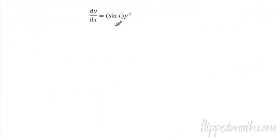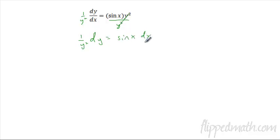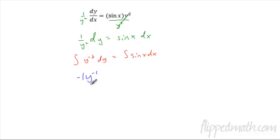Let's do another one. These are always going to be some kind of multiplication or division — it doesn't really work with addition or subtraction. First thing I've got to do is divide both sides by y squared to get my y's over here. So I'm looking at y squared dy, and bring the dx over — it's sine x dx. Then we look at the integral of y to the negative 2 with respect to y, and I have a trig function on the other side. Take the antiderivative, bump it up one, divide by negative 1. The antiderivative of sine is negative cosine — make sure you've got the negative in front — and now there's the plus c.